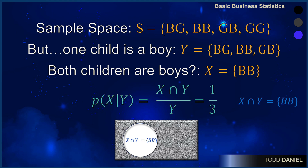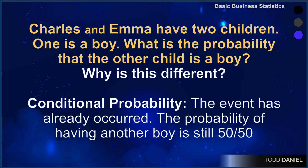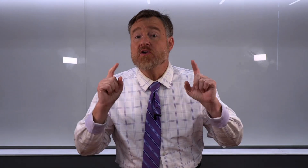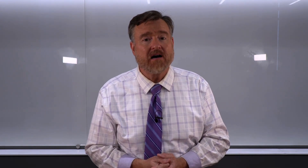Charles and Emma have two children. One is a boy. The probability that the second is a boy is one-third, not one-half. Why is this different? Why is the probability not 50%? It is because one event has already occurred, and that occurrence is now changing the sample space of the other probabilities. Another outcome has been affected by the occurrence of a first outcome. Knowing something about one outcome changes the probability of a different outcome.